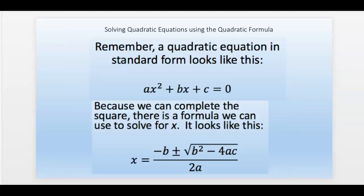A quadratic equation in standard form looks like this: ax squared plus bx plus c equals zero. That's the standard form of a quadratic. Since completing the square works for every quadratic, why don't we just use this standard form with a, b, c, and solve for x by completing the square? And we can do that.